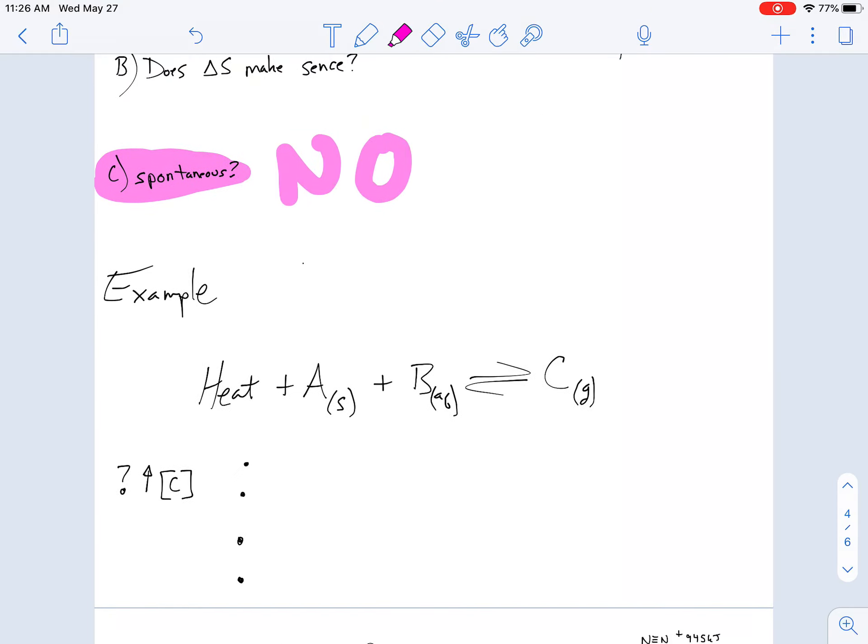Our last one. We have AB reacting to make C, and it looks like this is endothermic. I have heat on the left side of my reaction. My question to you would be, what are some things I could do to increase my concentration of C? This is the throwback question to previous lessons. Why don't you pause and try to think about things you could do to increase the concentration of C.